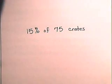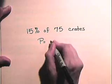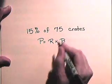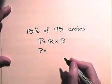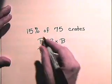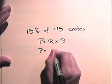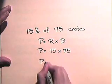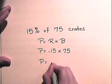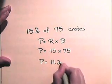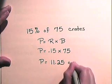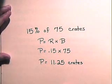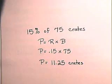Now let's do some exercises in which we solve for part. We're asked to find 15% of 75 crates. We know that part is equal to rate times base. We're going to solve for part in which the rate is 15%, or moving the decimal two places to the left, 0.15, times the base of 75. So the part is 0.15 times 75, which is 11.25 crates. So 15% of 75 crates is 11.25 crates.